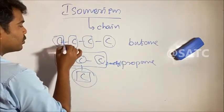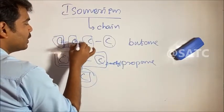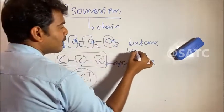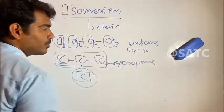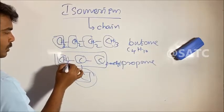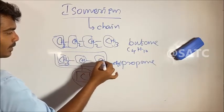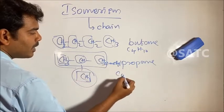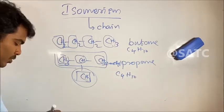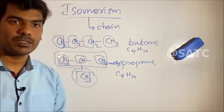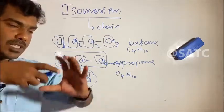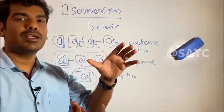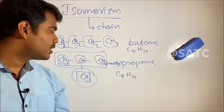Here we count: 3 hydrogens, 3 hydrogens, 3 hydrogens, and 10 hydrogens total — confirming C4H10. So this is chain isomerism. The chain arrangement changes, but the formula is the same. Chain isomerism is important — the difference is in how the carbon chain is arranged.